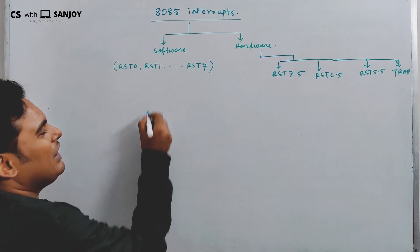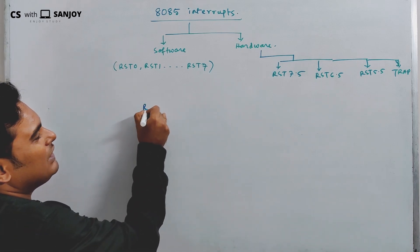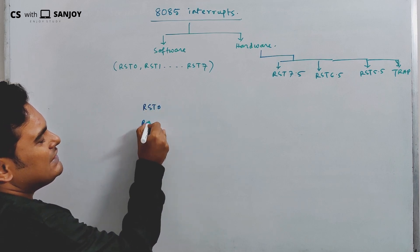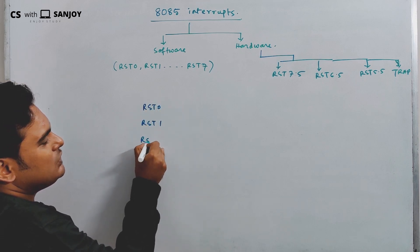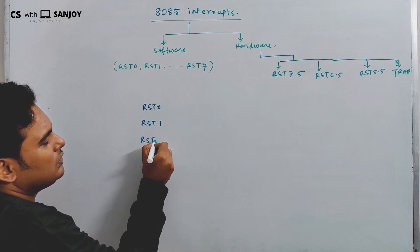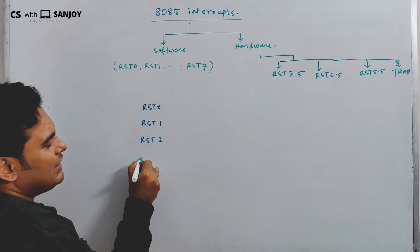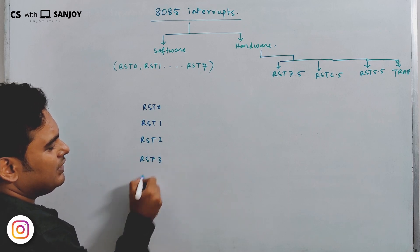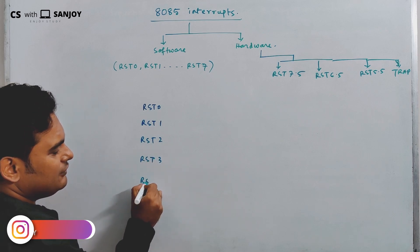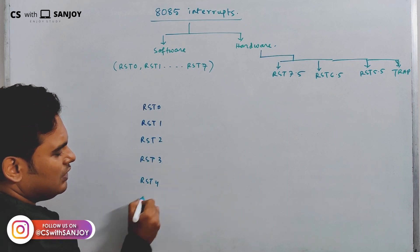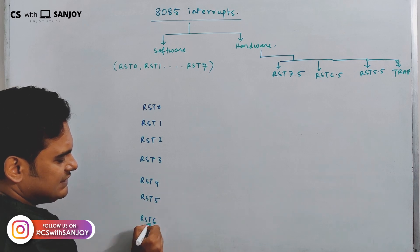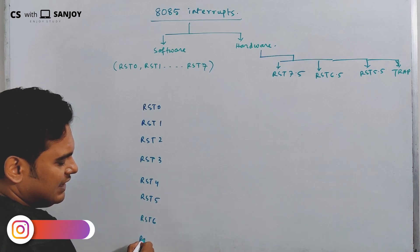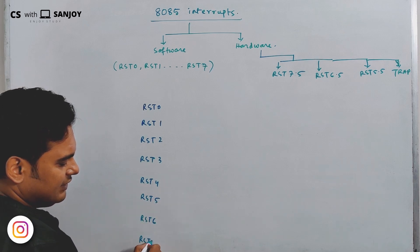Stay tuned. Let me show you. We have RST0, RST1, RST2, RST3, RST4, RST5, RST6, and RST7. These are the software interrupts.